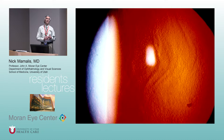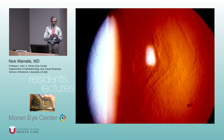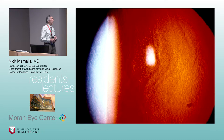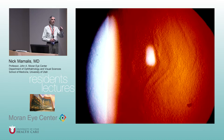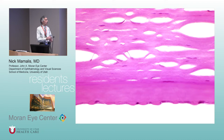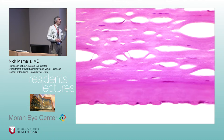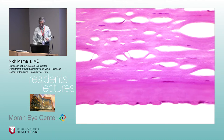This retroillumination view shows a beaten metal appearance — little dots on the inside surface of Descemet's membrane, like someone took a round hammer and pounded it. This is Fuchs' dystrophy. Pathologically you see thickened Descemet's membrane with gutata and loss of endothelial cells.